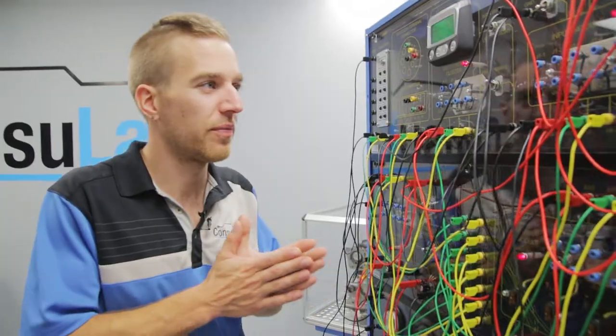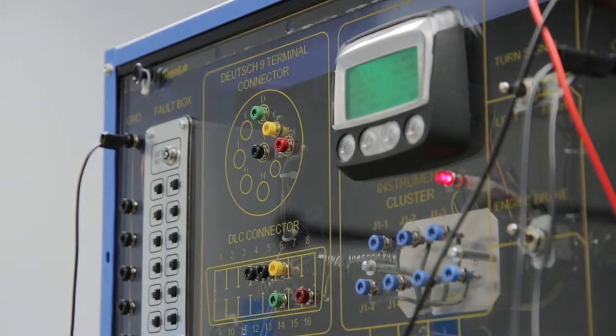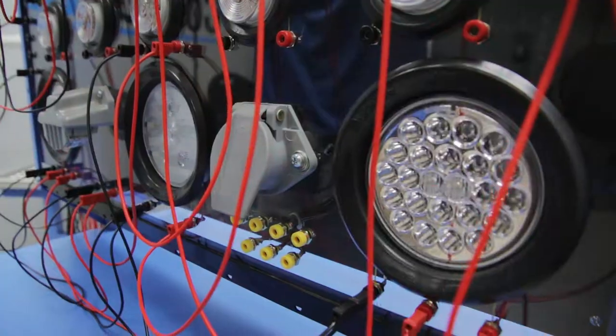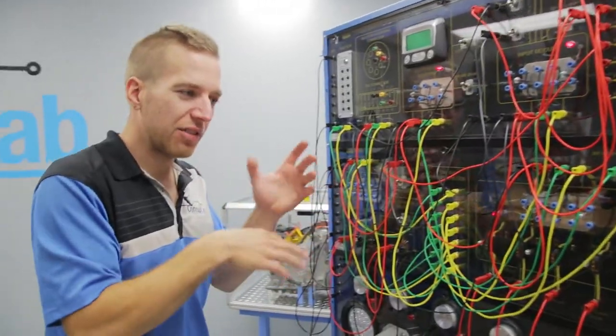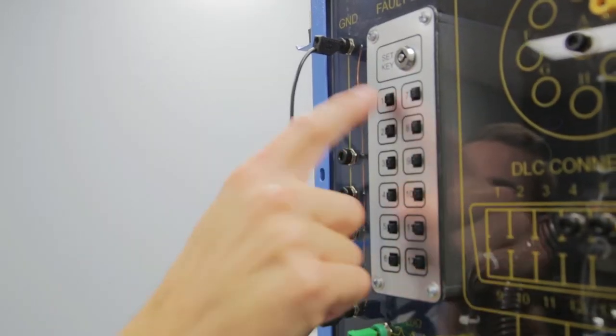So what can we do with this trainer when we're teaching to your students? We've got four modules, we've got all the wiring and once your students have got it up and running and they start flipping switches and they turn on the backup lights and the brake lights and they get everything working and they've tested it and they know it works, we can put 12 different faults in the system.